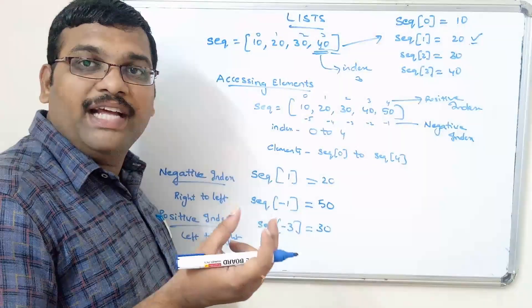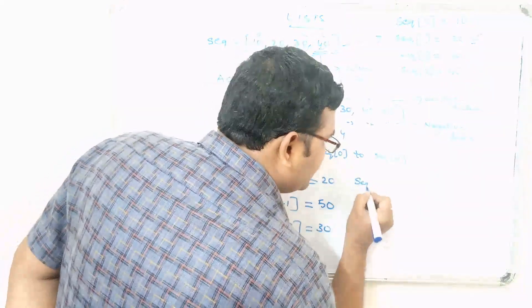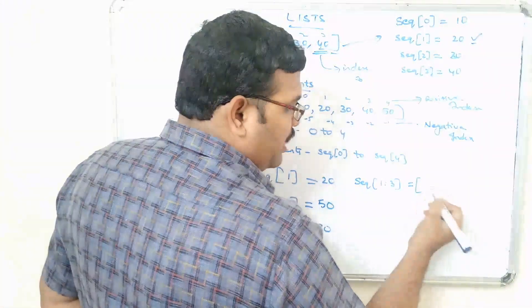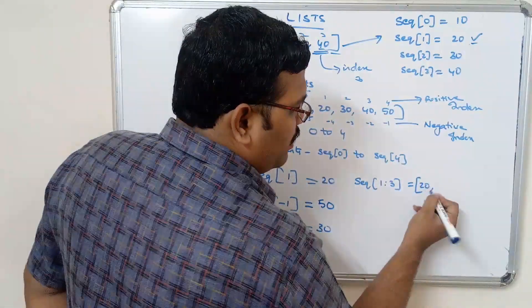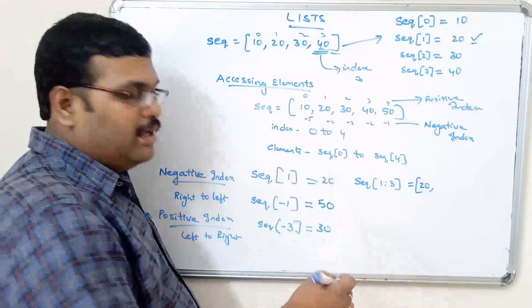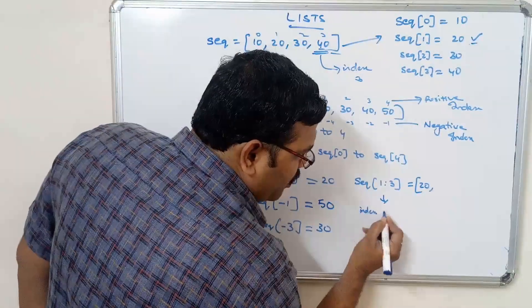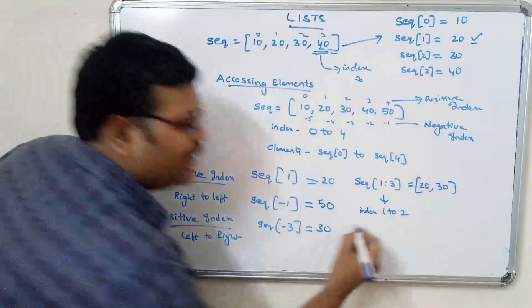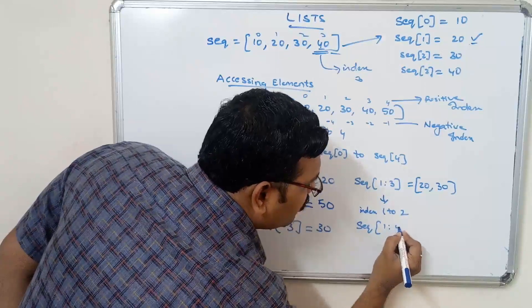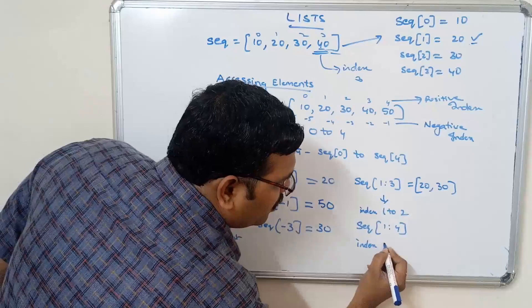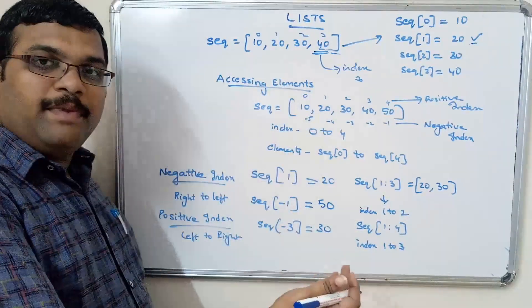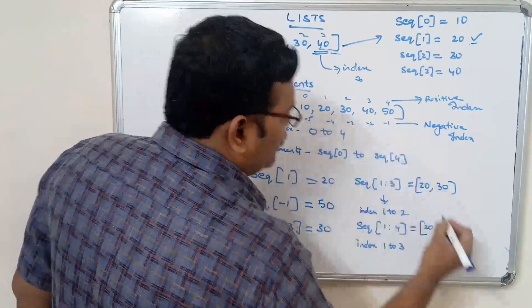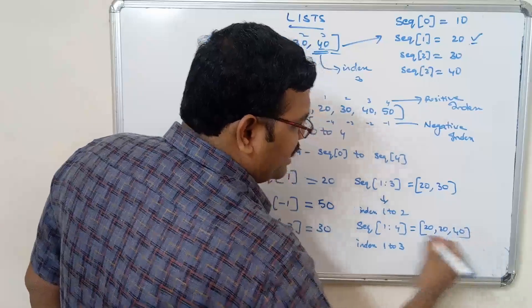We can also give a range of index values using slicing with a colon. sequence[1:3] means starting from index 1 and ending at index 3, but the last index is exclusive, so elements at index 1 and 2 are returned — that is 20 and 30. sequence[1:4] returns elements from index 1 to 3, giving 20, 30, and 40.